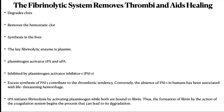Most components of the fibrinolytic system are synthesized in the liver. The key component is plasmin, which is formed when the circulating zymogen plasminogen is cleaved by one of two plasminogen activators: tissue plasminogen activator (TPA) or urinary plasminogen activator (urokinase). Plasminogen is synthesized in the liver, but its activators are not. Endothelial cells synthesize TPA and secrete it in response to hypoxia, ischemia, and thrombin. A variety of cells produce urokinase. Both types of plasminogen activators are inhibited by plasminogen activator inhibitor-1 (PAI-1), which is synthesized by hepatocytes, endothelial cells, and adipocytes. TPA initiates fibrinolysis by activating plasminogen while both are bound to fibrin; thus the formation of fibrin by the coagulation system begins the process that can lead to its own degradation.